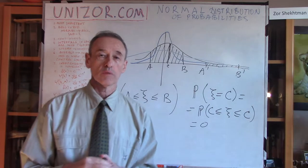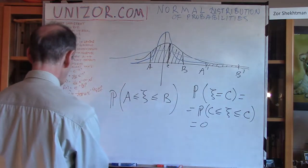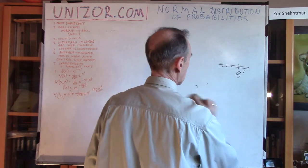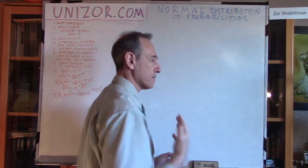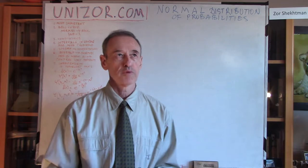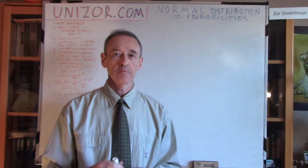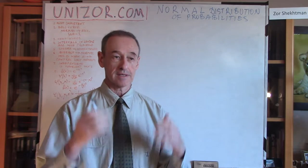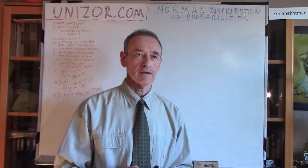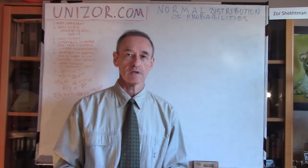Why is the normal distribution the most important distribution in the Theory of Probabilities? There is a very important theorem, which I'm not going to prove because the proof is rather difficult. But the fact that this theorem exists and can be proven is really quite amazing. I would compare it with the main theorem of algebra — that a polynomial equation of degree n has exactly n complex solutions. The theorem I'm going to talk about now is also strange; it was very strange to me when I first encountered it.